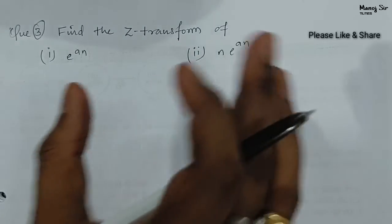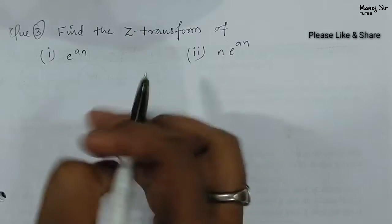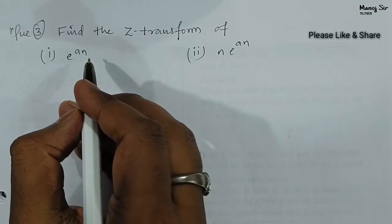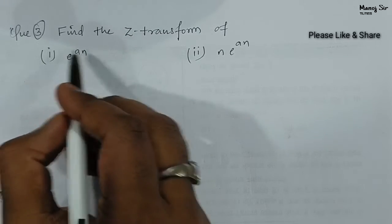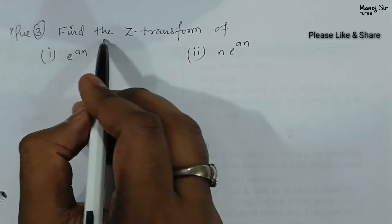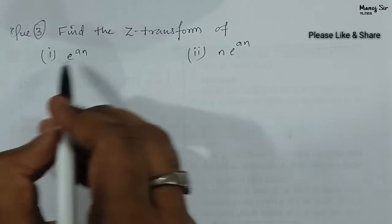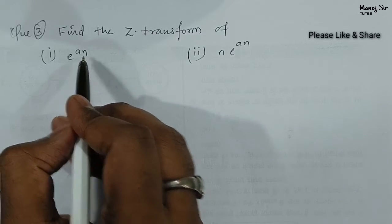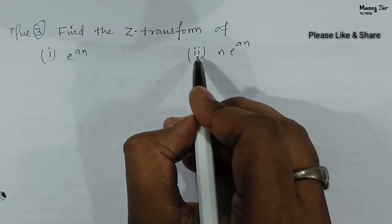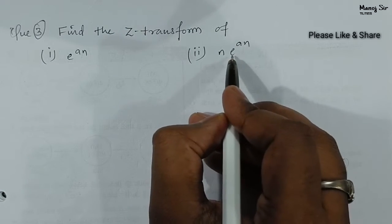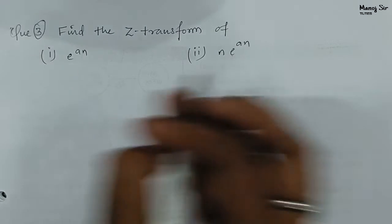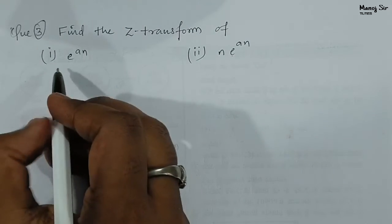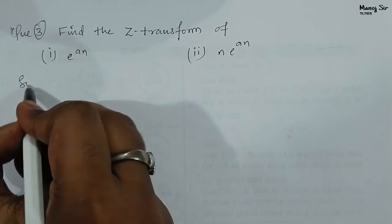Both the videos are very, very important. Let us start. Find the Z transform of: first, e to the power an, and second, n into e to the power an. Let us solve one by one.